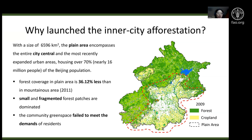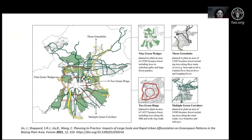In 2012, the Beijing government launched the Beijing Afforestation Program, with the aim of creating nine green wedges, three green belts, two green rings, and multiple green corridors. They started this project in 2012 and are still implementing it today.